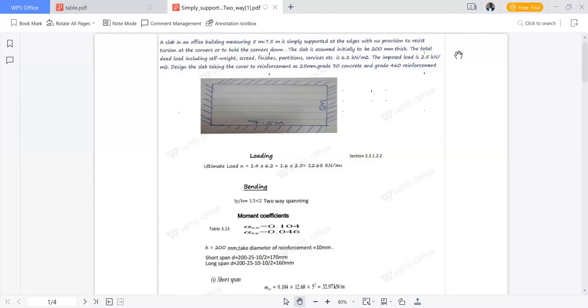Hello, welcome. Today we are going to look at design of simply supported two-way spanning slab. A slab in an office building measuring 5 meter by 7.5 meter is simply supported at the edges with no provision to resist torsion at the corner or to hold the corners down.